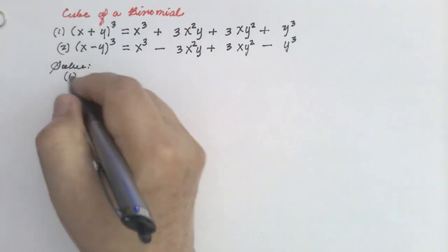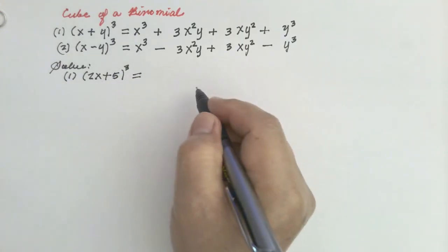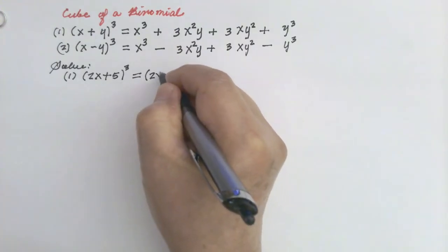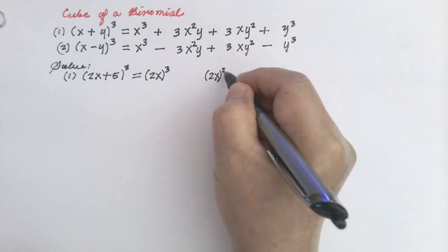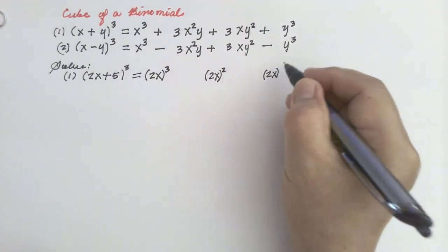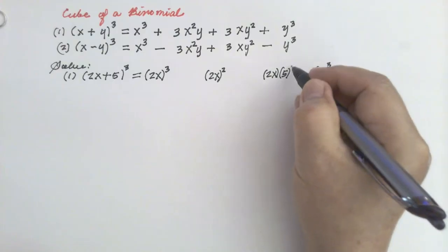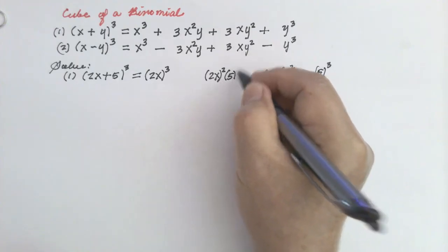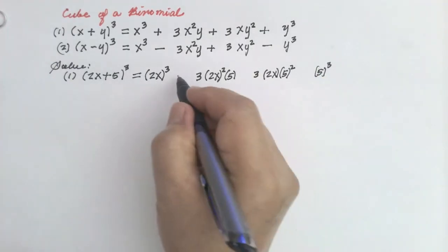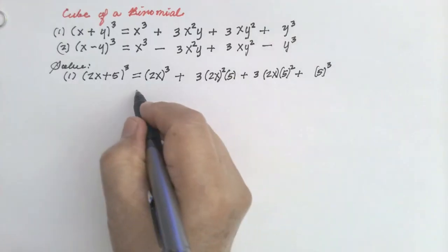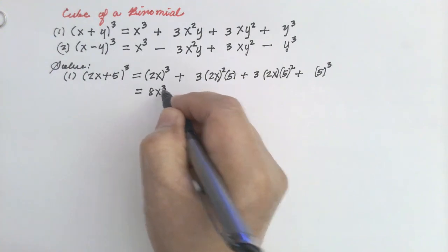Example number one: (2x + 5) cube. Our first term is 2x, so write 2x cube, then 2x square, then 2x raised to 1. Then for the second term write 5 cube, 5 square, and 5 raised to 1. Write 3 and write 3 for the coefficients. Since this is positive, all signs are positive: plus, plus, plus, plus.